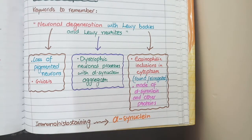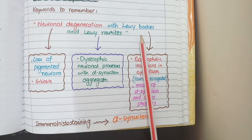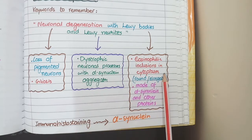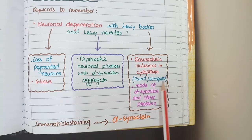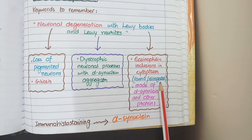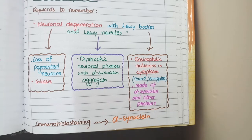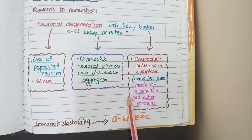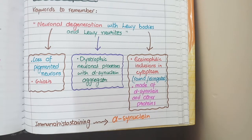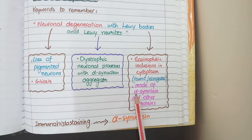The second keyword is Lewy bodies. These Lewy bodies appear as eosinophilic inclusions in the cytoplasm of neurons. These eosinophilic inclusions can be round as well as elongated, and these Lewy bodies are made up of the protein alpha-synuclein and other similar proteins.